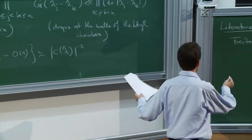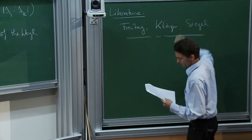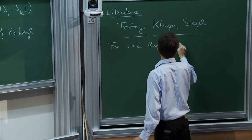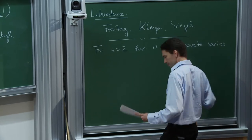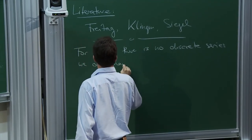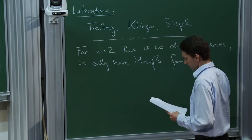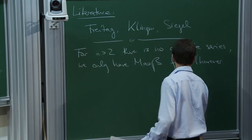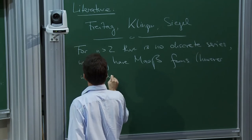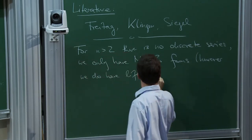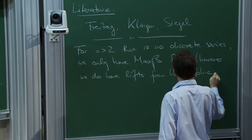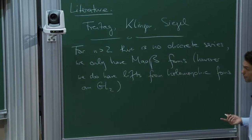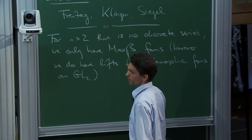For n > 2, there is no discrete series — we only have mass forms. However, we do have lifts from holomorphic forms on GL(2). For instance, you can take a holomorphic form on GL(2) and take the symmetric square, and then you get a mass form on GL(3).